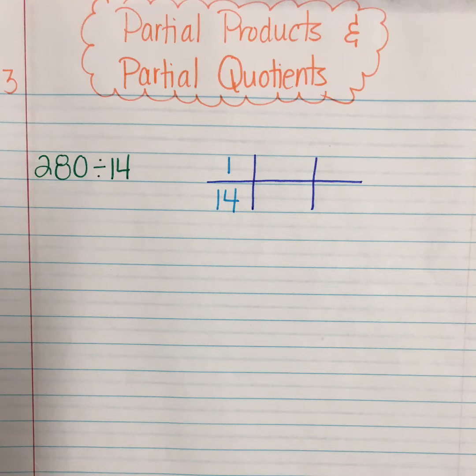Go ahead and put a heading on your paper, partial products and partial quotients, and record this problem: 280 divided by 14. I'd also like for you to start your ratio table. What I'm going to do as you're writing is I'm just going to explain one thing. When you're doing a ratio table there is not one set way to complete it or one correct way to complete it. You can work forwards, you can work backwards. Just know that your first number should always be a unit and then what you're going to be multiplying by.